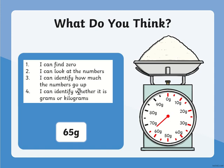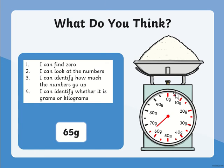Have a look at this scale — it's weighing some rice or flour and it's in a circular shape. First, find zero — zero is at the top. Then look at the numbers and see how much it goes up by. It goes from zero, then 10, 20, 30, 40, 50, 60, 70, 80, 90, and back to 100 or zero. It also has a halfway mark, so half of 10 is 5, meaning the little line in between means it goes up by 5.